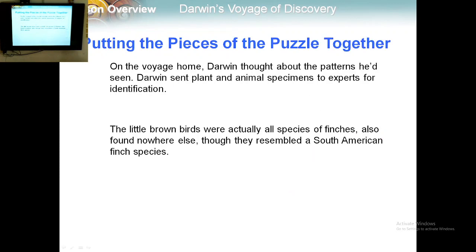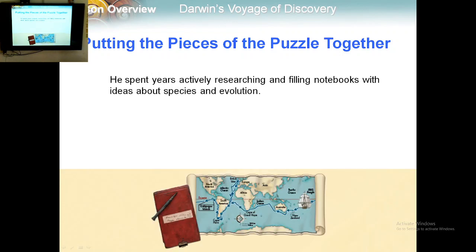On the voyage home, Darwin thought about the patterns he had seen. Darwin sent plant and animal specimens to experts for identification — the little brown birds were actually all species of finches, found nowhere else, but they resembled a South American finch species. He spent years researching and filling notebooks with ideas about species and evolution. The three main points are: species vary globally, species vary locally, and species vary over time.